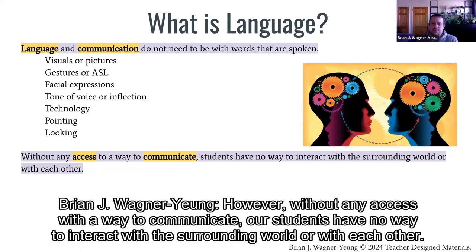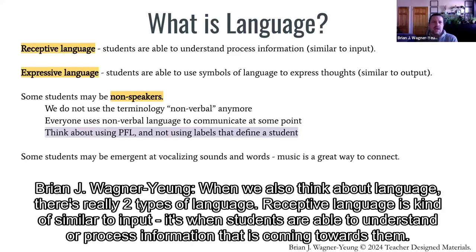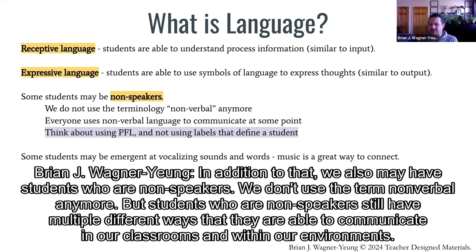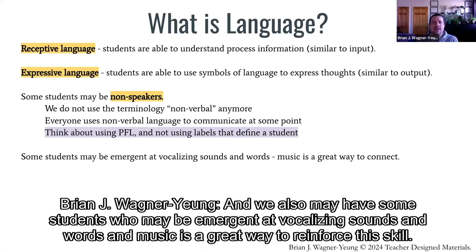Without any access to a way to communicate, our students have no way to interact with the surrounding world or with each other. There are really two types of language. Receptive language is similar to input — when students are able to understand or process information coming towards them. Expressive language is similar to output — when students use symbols of language to express their thoughts. Some students may have challenges in only one or both. We also may have students who are non-speakers — we don't use the term non-verbal anymore — but they still have multiple ways to communicate. And some students may be emergent at vocalizing sounds and words, and music is a great way to reinforce this skill.